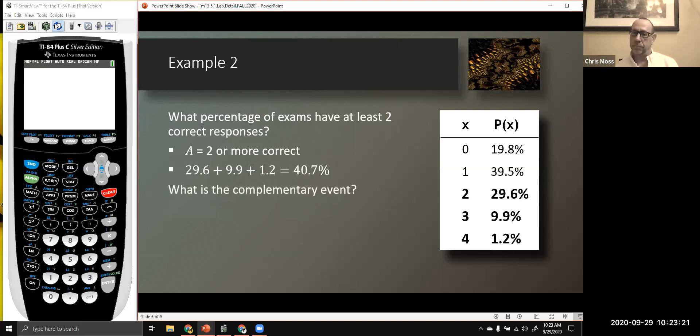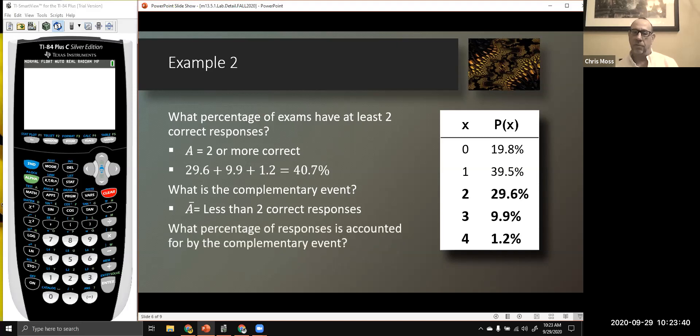The complementary event. Well, the complementary event is the stuff that is not two or more correct. A bar is less than two correct responses. What do we have on our table that falls into that particular definition? And what percentage of responses is accounted for by that complementary event? Zero or one responses. That's the complementary event.